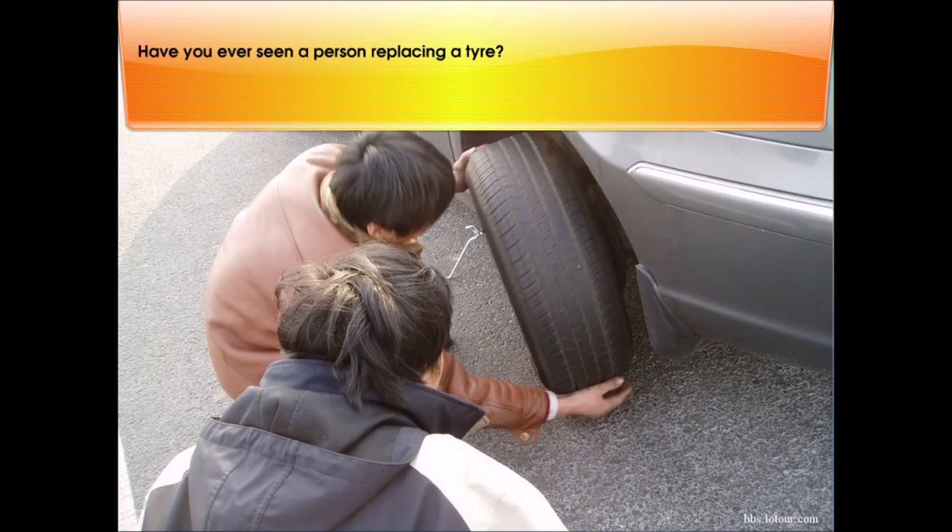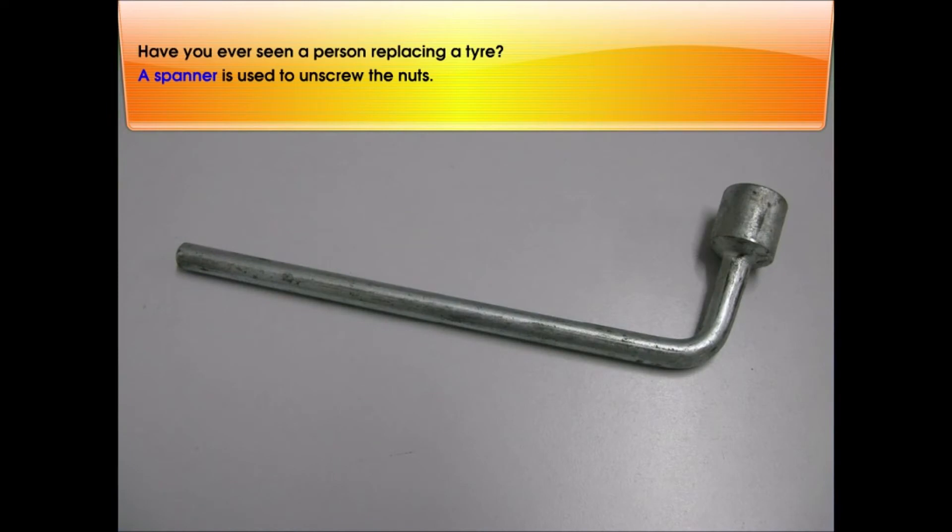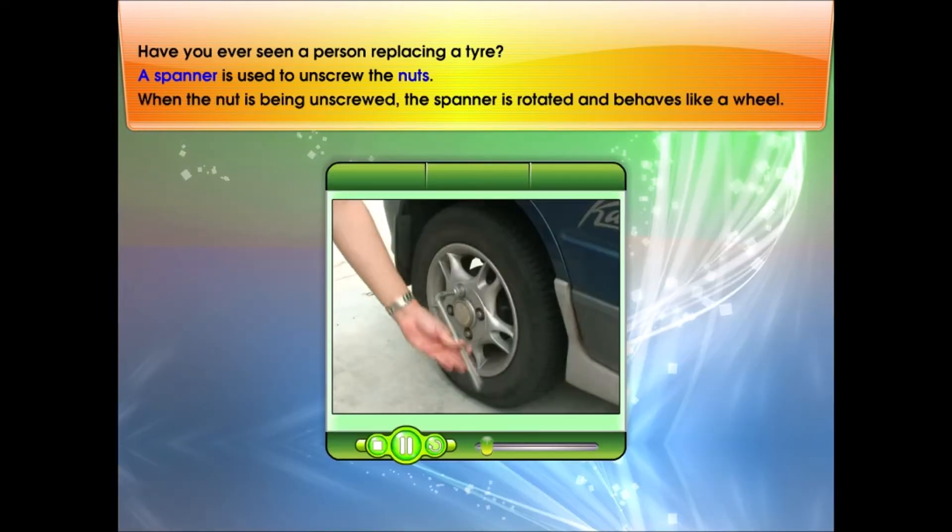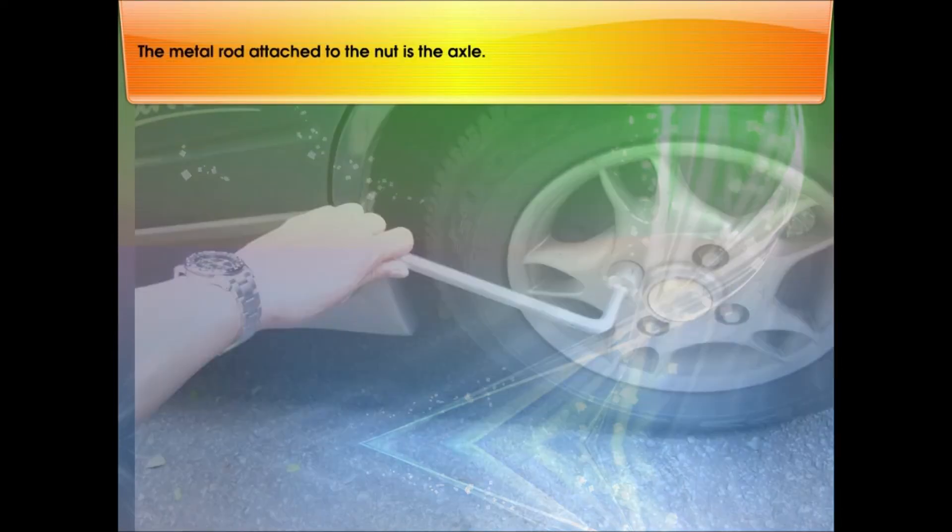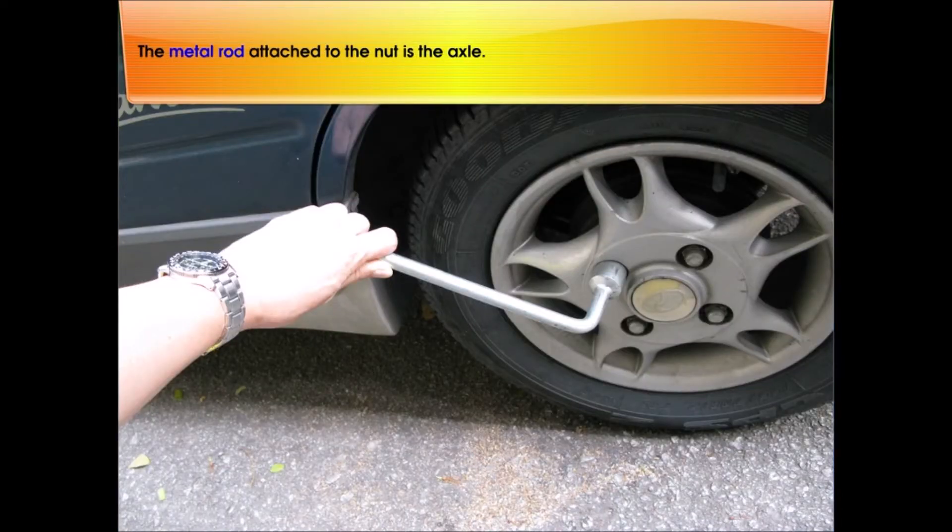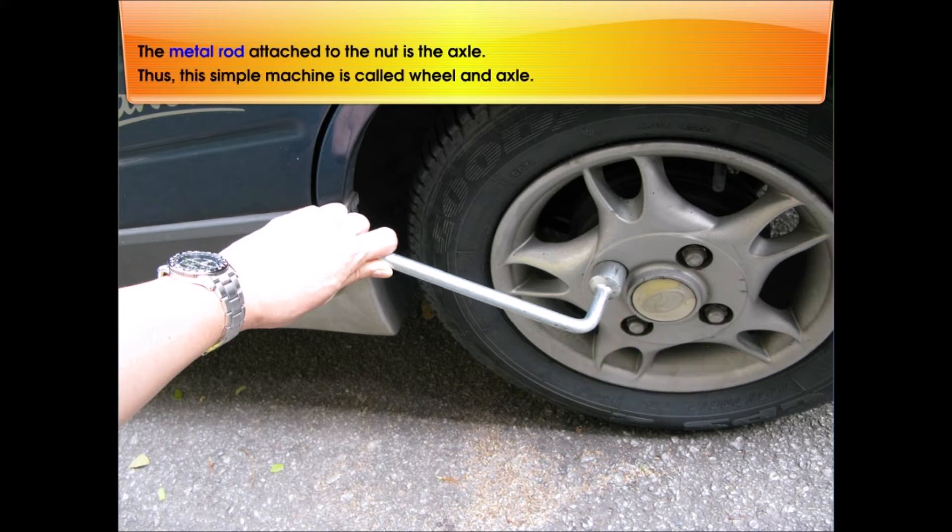Have you ever seen a person replacing a tire? A spanner is used to unscrew the nuts. When the nut is being unscrewed, the spanner is rotated and behaves like a wheel. The metal rod attached to the nut is the axle. Thus, this simple machine is called wheel and axle.